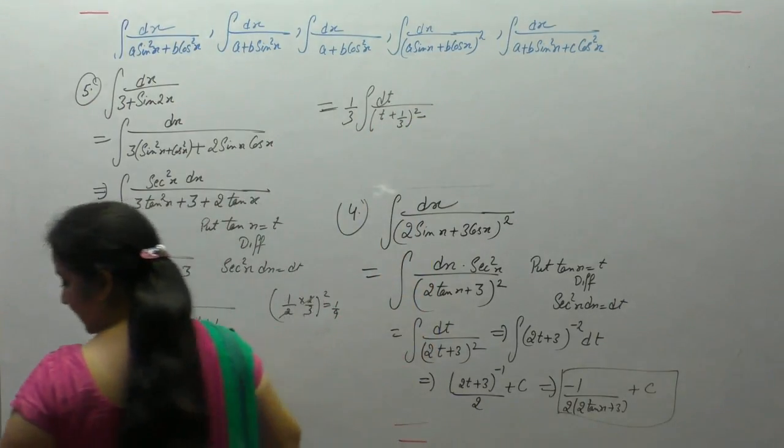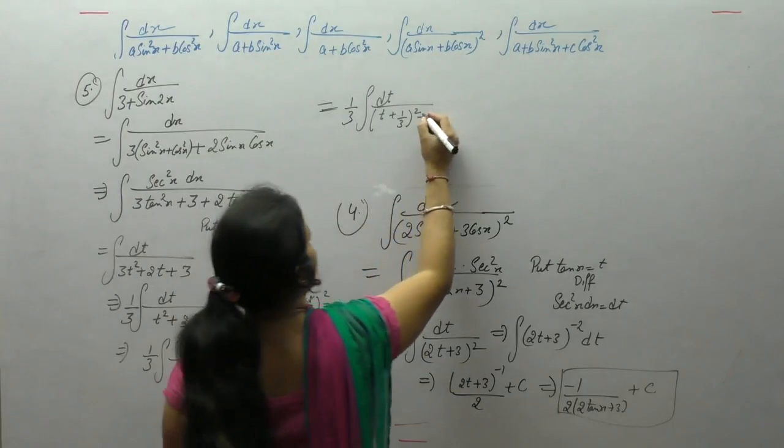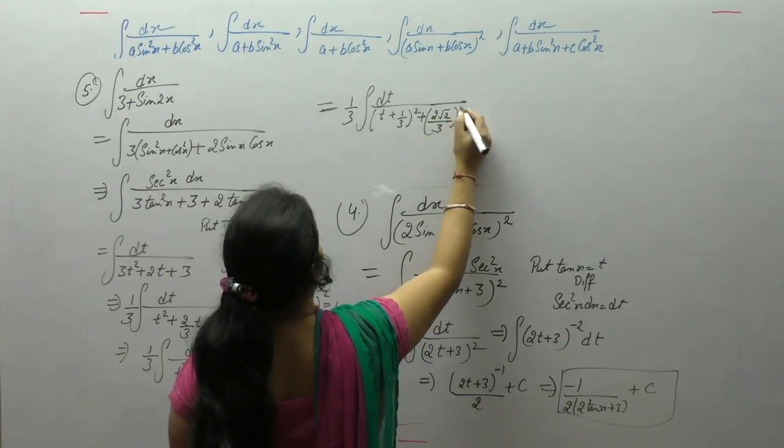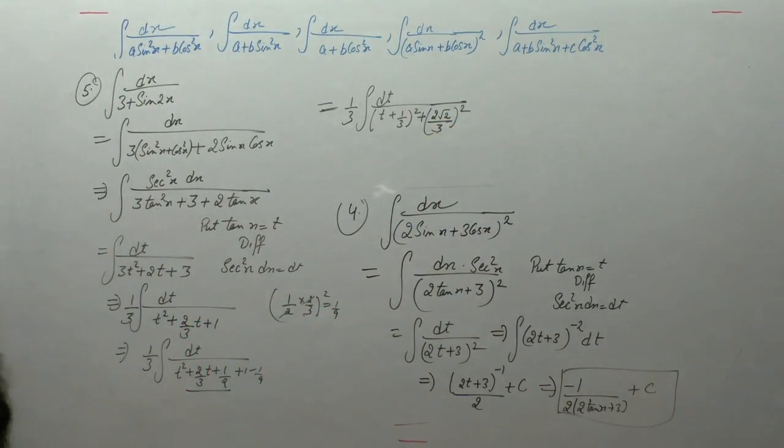9 minus 1 is 8, 8 by 9, we can write 8 as 2 square root of 2 upon 3 whole square. It is of the form integral of 1 upon x square plus a square.